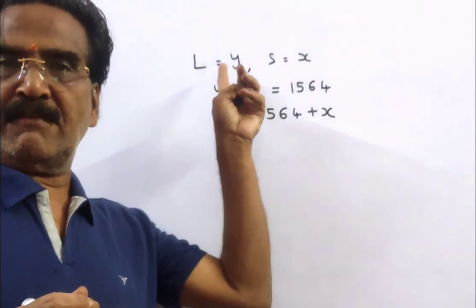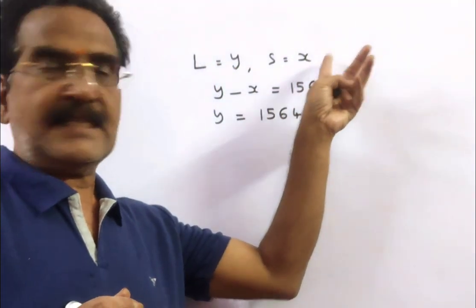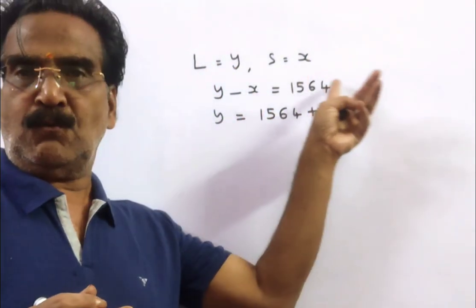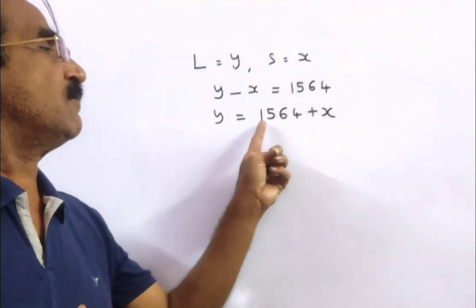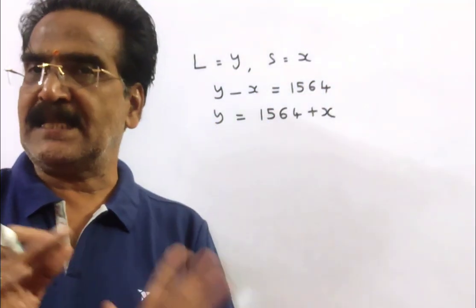Friends, let's say the larger number is y and smaller number is x. Then y minus x is equal to 1564. It implies y is equal to 1564 plus x.